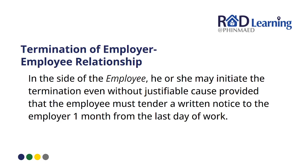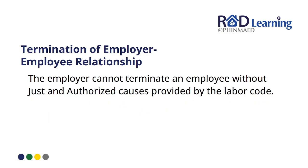On termination of the employer-employee relationship: on the side of the employee, he or she may initiate termination even without justifiable cause, provided that the employee must tender a written notice to the employer one month before the last day of work — this is the 30-day notice or resignation. On the side of the employer, the employer cannot terminate an employee without just cause and/or authorized cause as provided by the Labor Code.